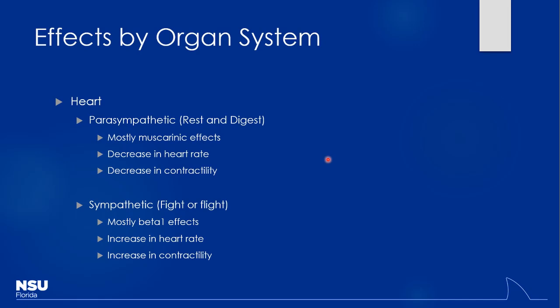The belladonna alkaloids are a group of plants that are anti-muscarinic in nature. Belladonna means beautiful woman in Italian, and they used to put them in their eyes to cause mydriasis because they thought that look was beautiful. If you see belladonna alkaloids referenced, it's referring to that — basically putting atropine drops into their eyes. Nowadays, if someone showed up on a date with super dilated pupils, you'd think they're obviously on drugs.